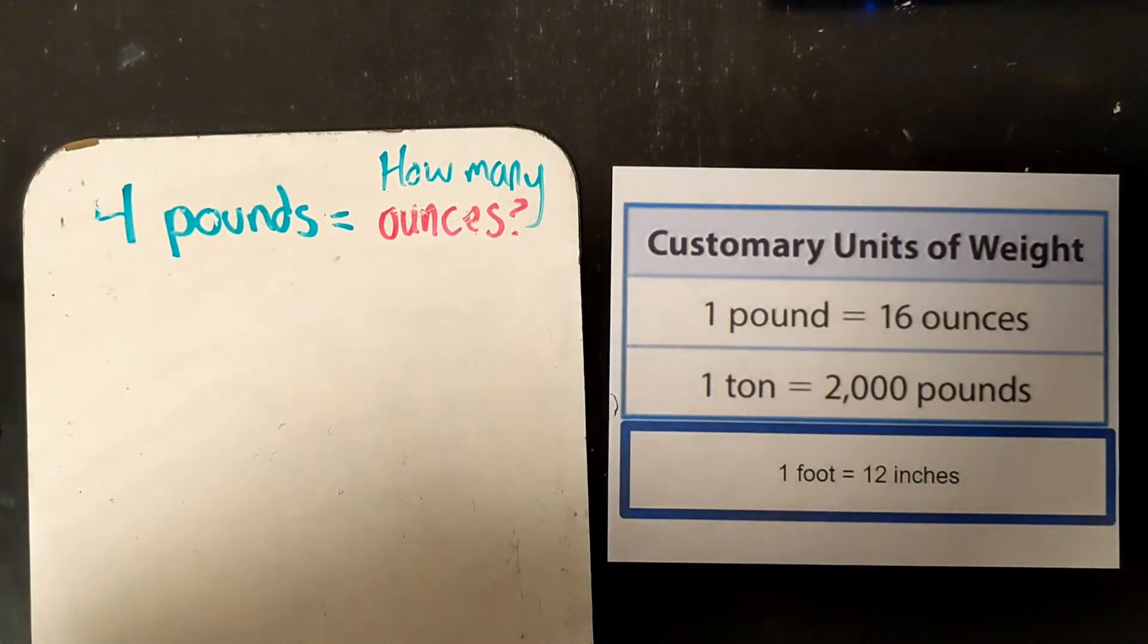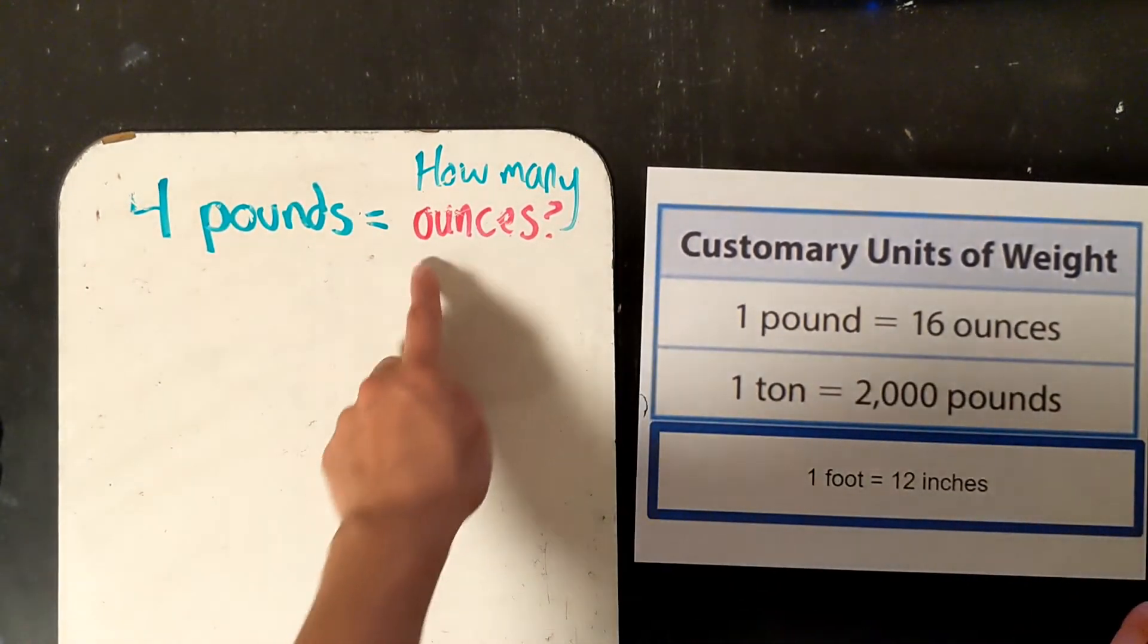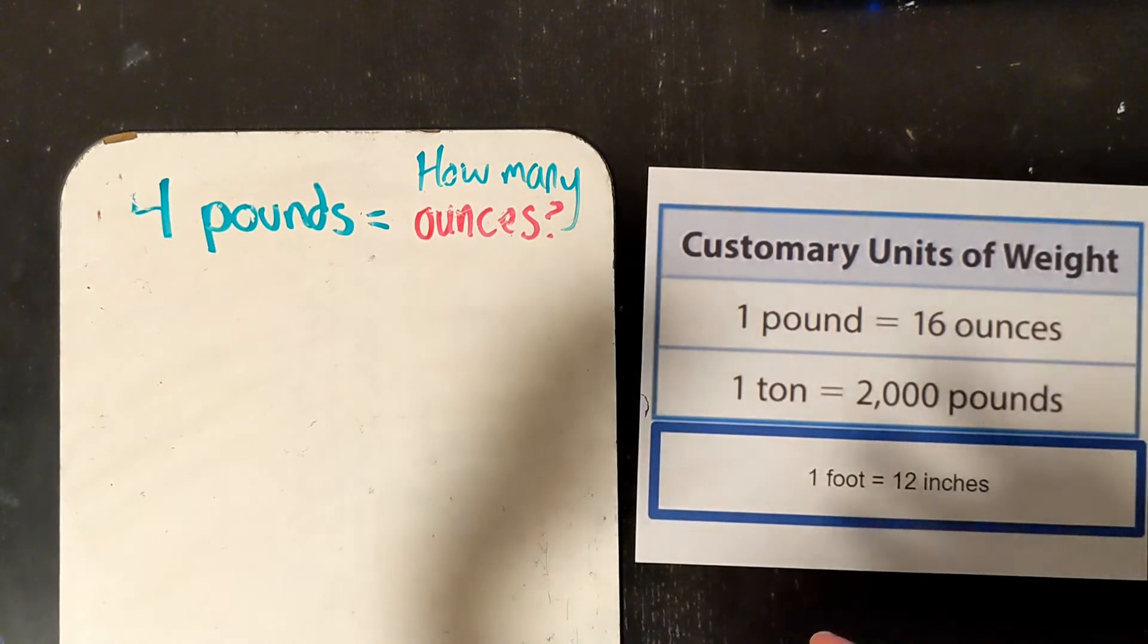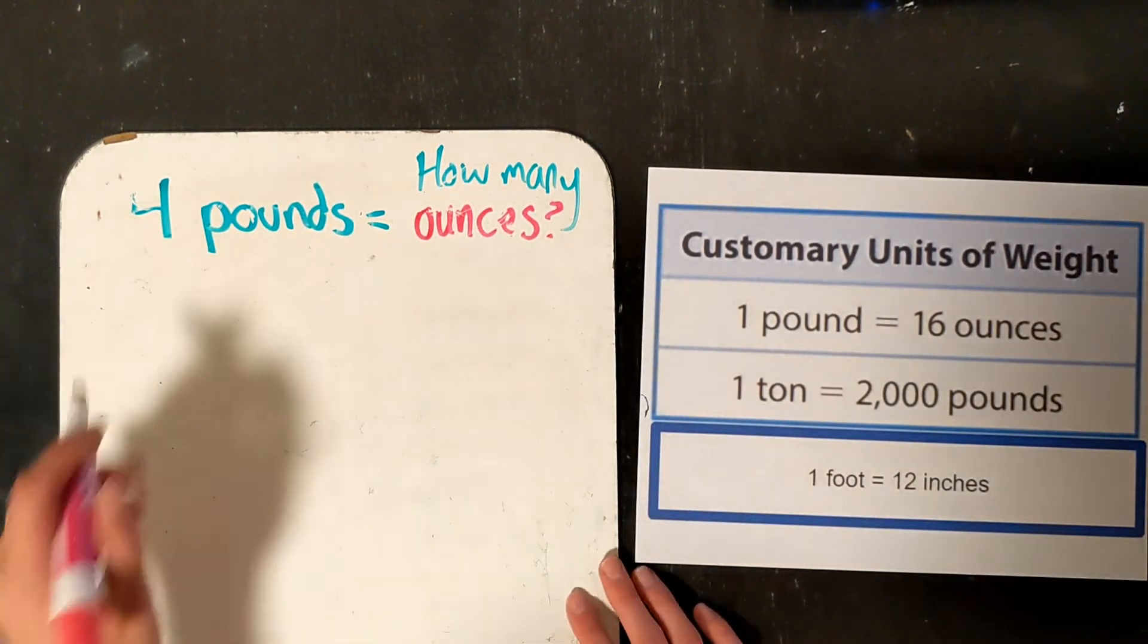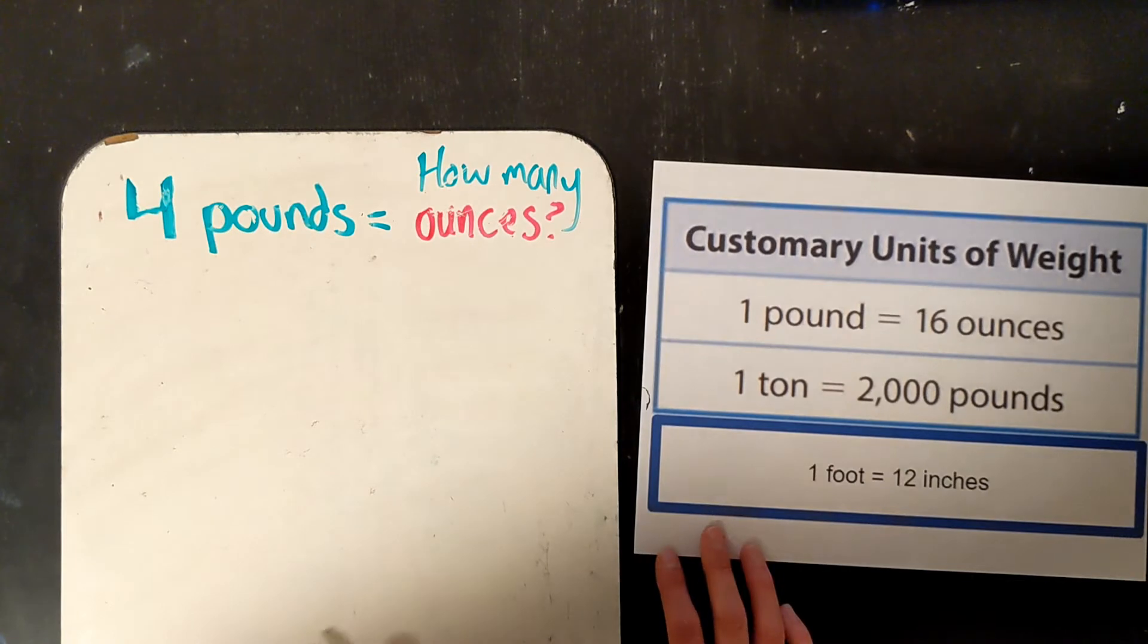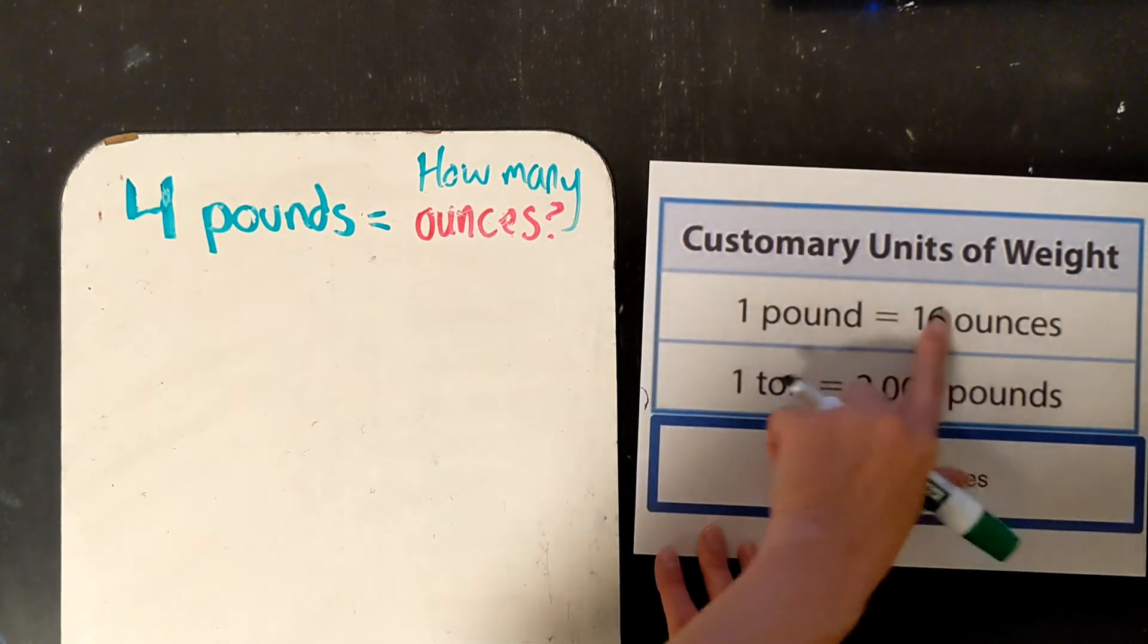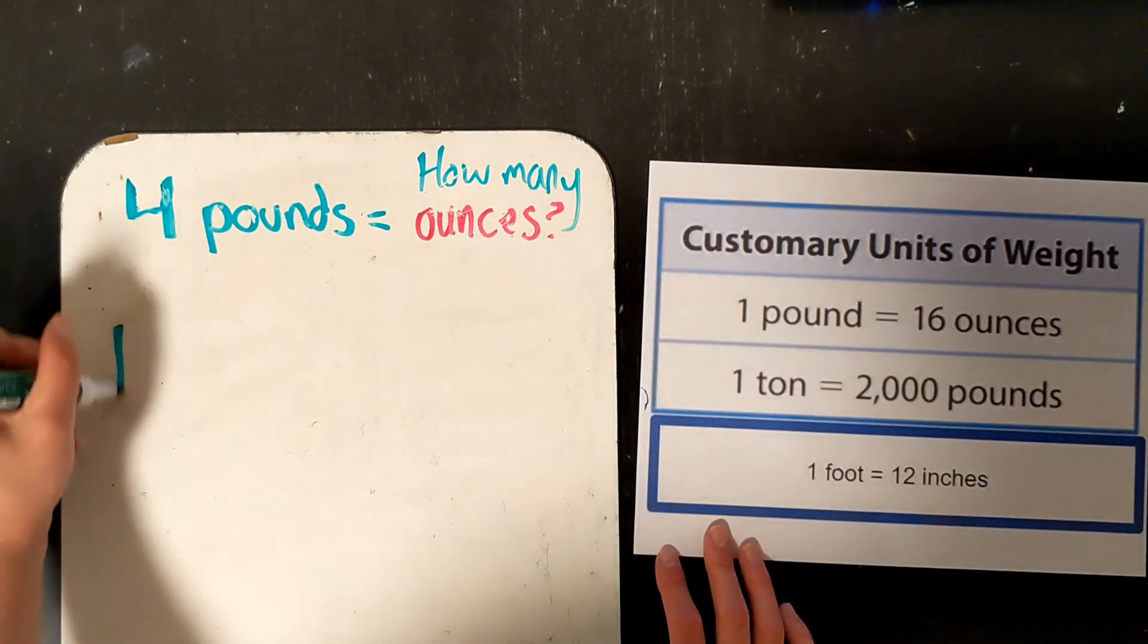Now we are going to do some with ounces. So a lot of times when I am cooking, I will have a recipe or I am baking and it will tell me how many ounces of sugar I need. But maybe I have a whole pound. I have a bag. And so I want to convert between that. So 4 pounds is how many ounces? Well, take a look at the chart. How many ounces are in 1 pound? 1 pound is 16 ounces.